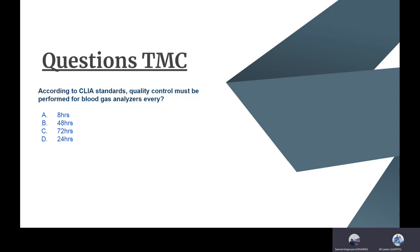Next we have a TMC question from our TMC that we took last week. It says, according to CLIA standards, quality control must be performed for blood gas analyzers every blank, and the answer is every eight hours. CLIA wants ABG machines to be calibrated every eight hours to make sure that they're accurate.